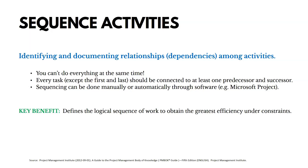Now let's talk about sequencing activities. When we define activities, we have to make sure we sequence them in the right order — that's going to help us when we put together our schedule. Sequencing involves identifying and documenting relationships or dependencies between activities, because you can't do everything at the same time. Every task, except for the first and last, should have at least one predecessor and one successor. You can do this manually, but it makes most sense to have a tool like Microsoft Project. The key benefit is it defines the logical sequence of work to get the greatest efficiency under constraints.